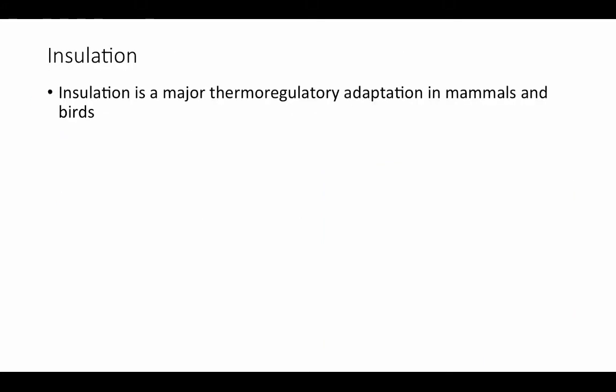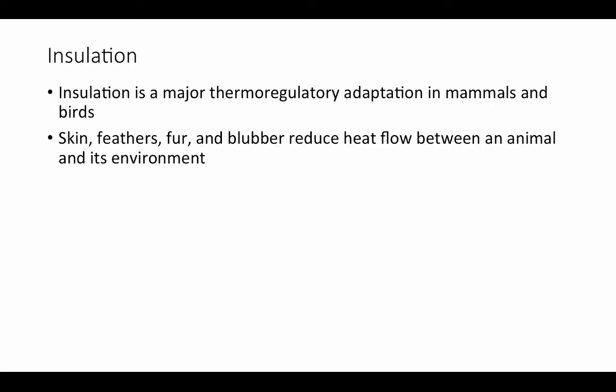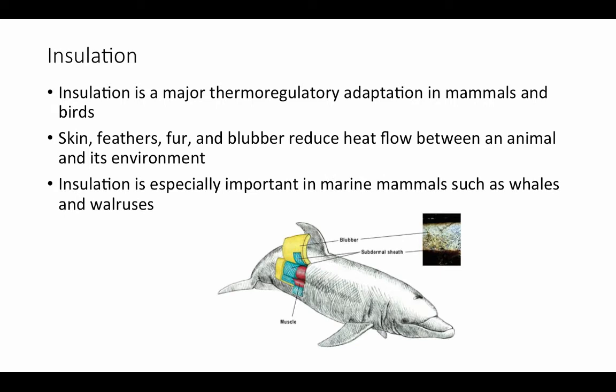Insulation is a major thermoregulatory adaptation in mammals and birds — fur and feathers are defining features of each respectively. Skin, feathers, fur, and blubber reduce heat flow between an animal and its environment, particularly important in cold environments. Insulation is especially important in marine mammals such as whales and walruses in very cold water. The subcutaneous blubber layer is not just fat but a highly organized adipose tissue with collagen fiber networks that maintain the smooth, streamlined body shape while preventing heat exchange with cold water.